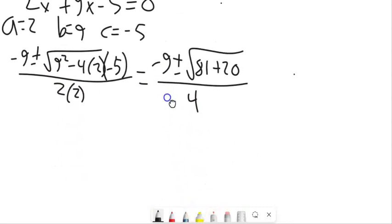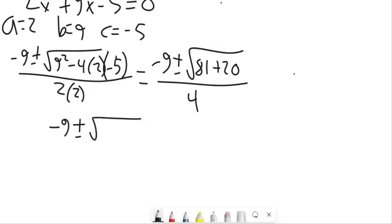Keep doing some arithmetic here. Negative 9 plus or minus the square root. 81 plus 20, what's that, 101? And 101, I don't think I'm going to be able to reduce that down. I think it might be prime. But anyways, there's my answer. That's what X is equal to. X is equal to those two things.